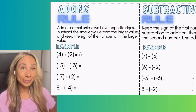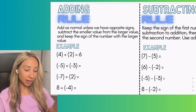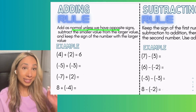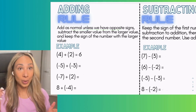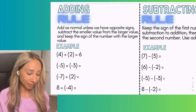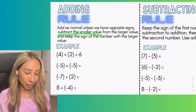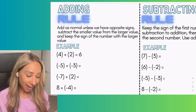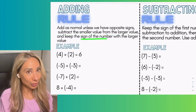Let's look at the rules for adding integers. We are going to add as normal unless the signs are opposite. If the signs are opposite — so if we have a positive and a negative — then we're going to subtract the smaller value from the larger value and keep the sign of the number with the larger value.